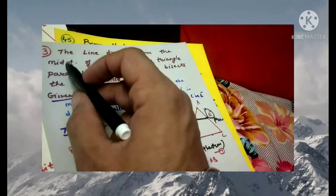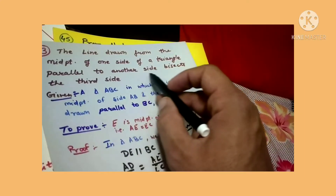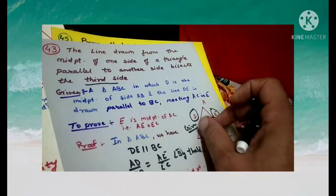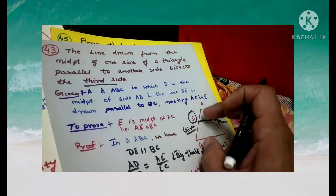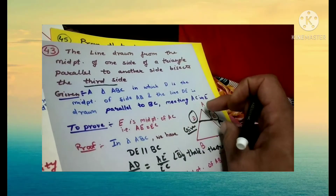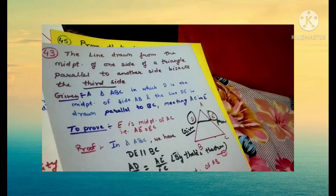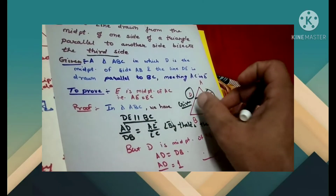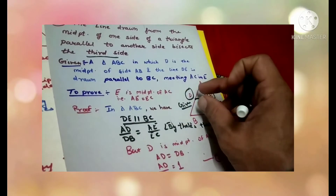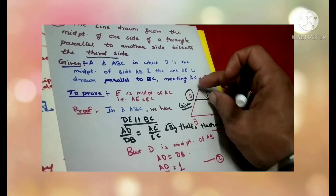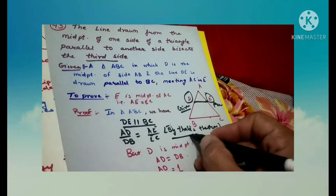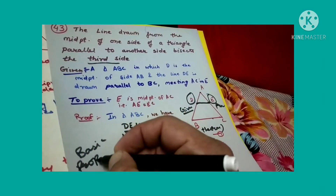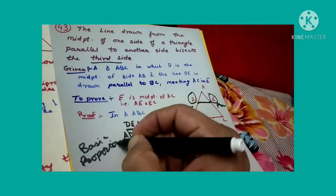This line DE is parallel to BC, and D is the midpoint of AB, so we have to prove that E is the midpoint of AC. We use the Basic Proportionality Theorem (Thales theorem): since DE is parallel to BC, AD by DB is equal to AE by EC.